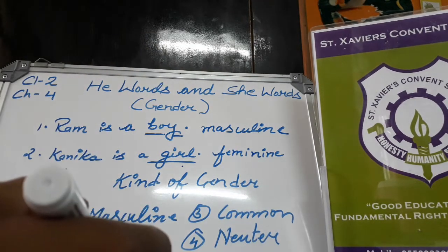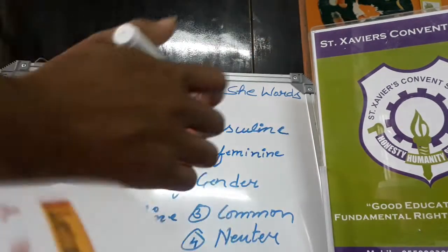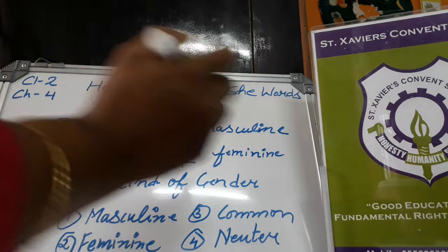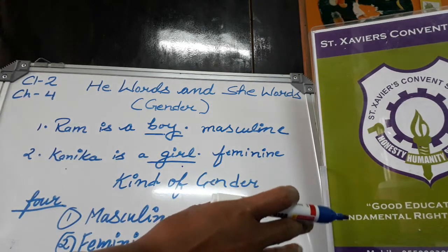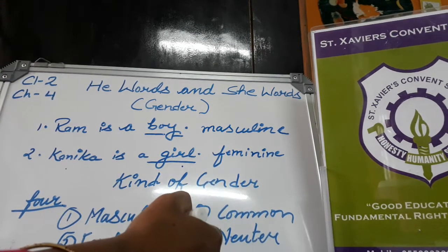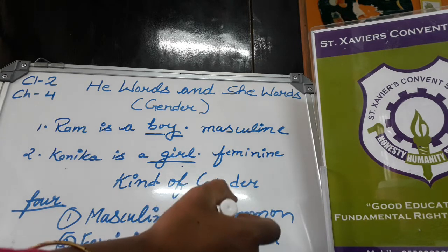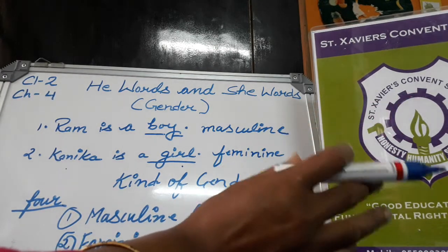In this lesson, we will learn about masculine gender and feminine gender only, as per your syllabus. But remember, there are four kinds of gender: masculine, feminine, common, and neuter. All males are in masculine gender, all females are in feminine gender, some nouns can be in common gender, and non-living things are neuter gender.